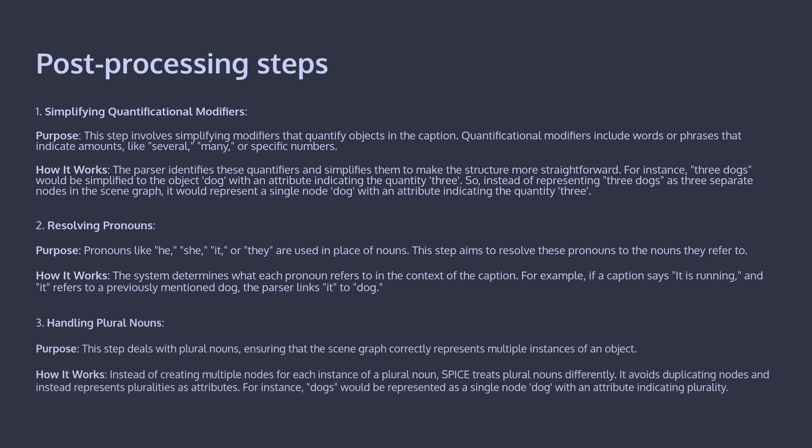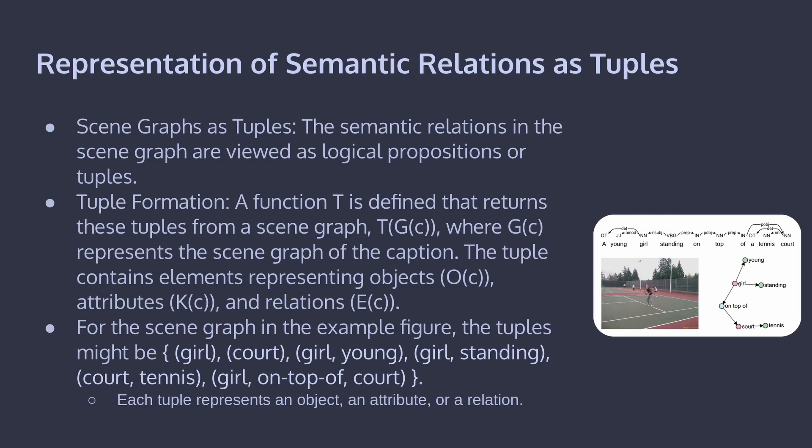Another post-processing step handles plural nouns to ensure the scene graph correctly represents multiple instances of an object. Instead of creating multiple nodes for each instance of a plural noun, SPICE treats plural nouns differently — it avoids duplicating nodes and instead represents pluralities as attributes. For instance, 'dogs' is represented as a single node 'dog' with an attribute indicating plurality.